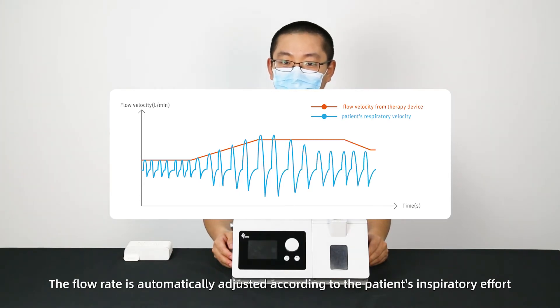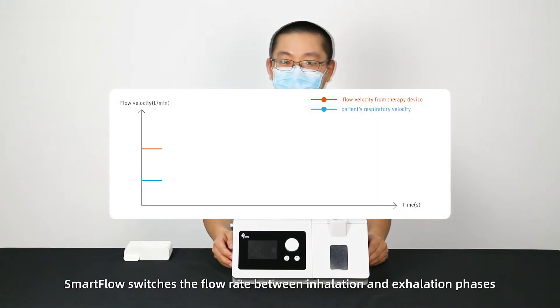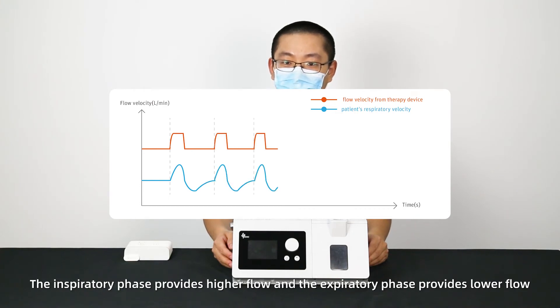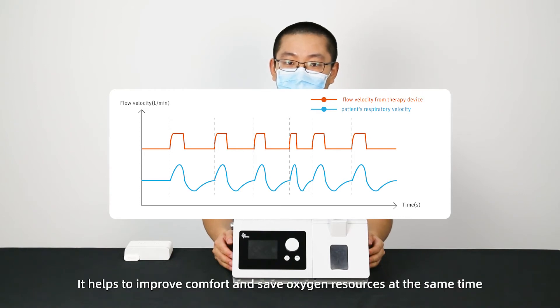Smart flow switches the flow rate between inhalation and exhalation phases. The inspiratory phase provides higher flow and the expiratory phase provides lower flow. It helps to improve comfort and save oxygen resources at the same time.